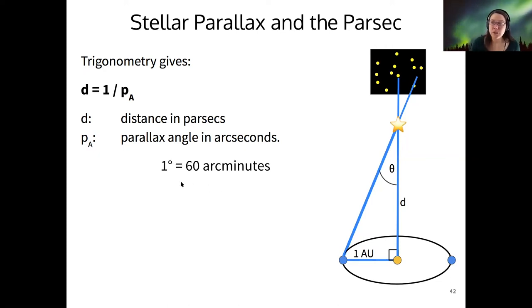Well, one degree, there's of course 360 degrees in a circle. So one degree contains 60 arcminutes, and then one arcminute contains 60 arcseconds. So there are 3,600 arcseconds in one degree. So as you can imagine, that's a pretty small angle.